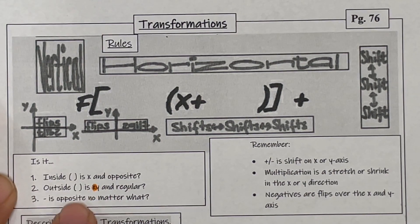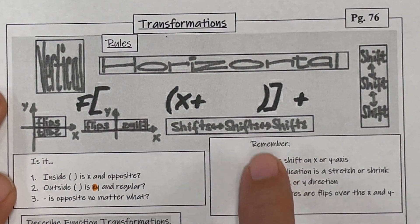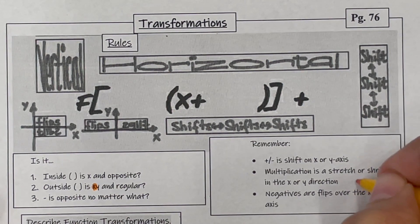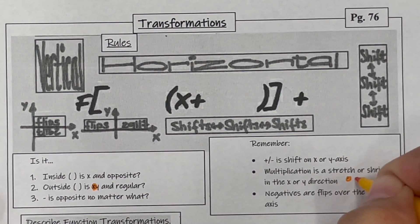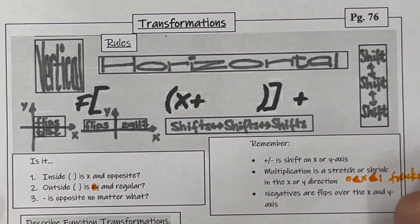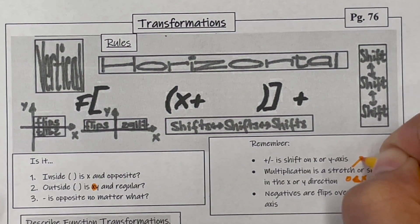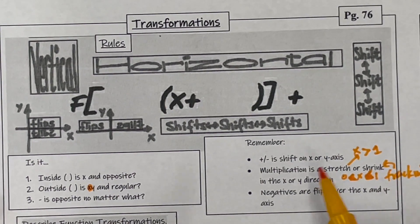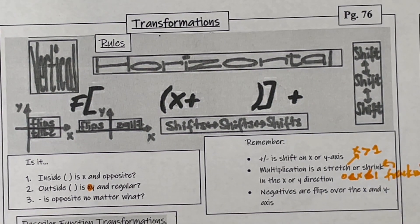Once you ask yourself whether it's inside or outside, or whether you have a negative, your second question is: positives and negatives are shifts on the X or Y axis. Multiplication is a stretch or shrink in the X or Y direction. Fractions between zero and one cause shrinks, and numbers bigger than one cause stretches. Negatives are flips over the X and Y axis respectively.